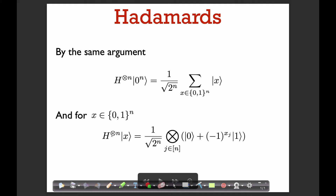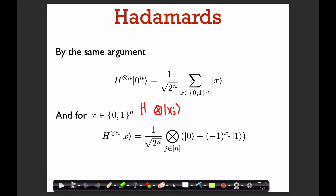Again, we can write this as a tensor product. Since x is a tensor product state — just a tensor product of |x_j⟩, where x_j is the j-th bit of x — we have H^{⊗n} applied to this tensor product state, which is just the tensor product of H applied to |x_j⟩. We know what H does to |x_j⟩: we can succinctly write that as |0⟩ plus (−1)^{x_j} |1⟩.